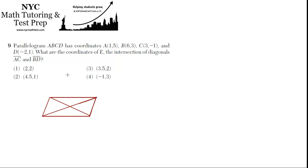Parallelogram ABCD has coordinates A, B, C, and D as shown. What are the coordinates of E, the intersection of the diagonals AC and BD?